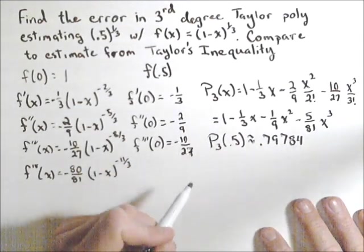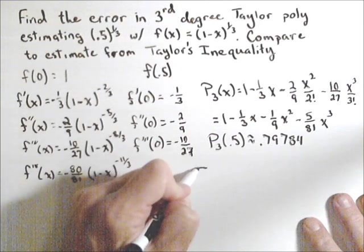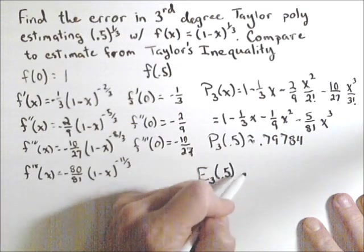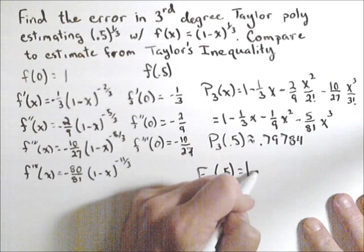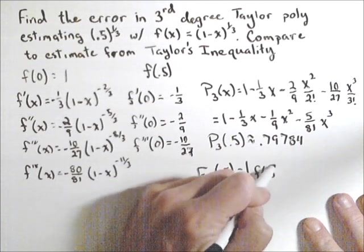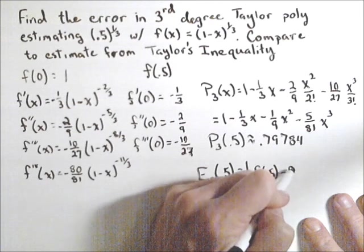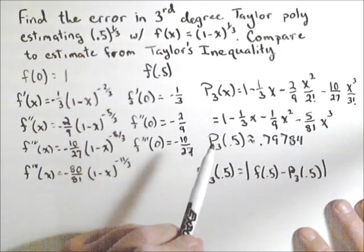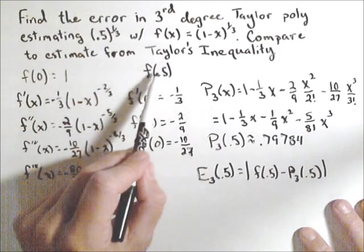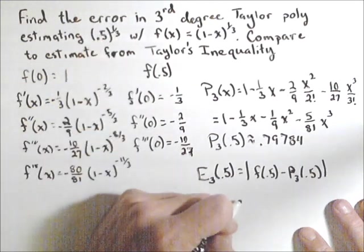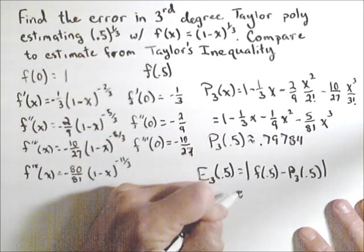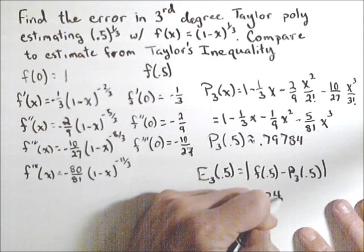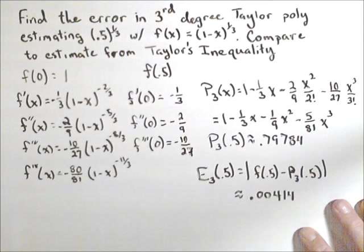P_3(0.5) to a few decimal places is about 0.79784. Now we can actually calculate the error in our third degree Taylor polynomial. So E_3(0.5), that's the error in our third degree polynomial at 0.5, is equal to the absolute value of f(0.5) minus P_3(0.5). So P_3(0.5) we just calculated. f(0.5), well that's just 0.5 to the 1/3. You can put that in your calculator, find the difference, and we take the absolute value. It's a pretty small number. It comes out to be about 0.00414. So that's the actual error.